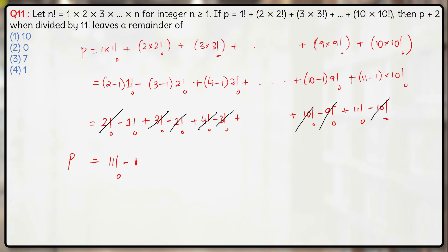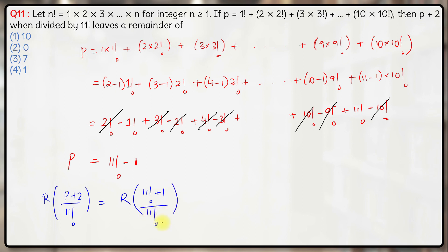Now we find the remainder when p + 2 is divided by 11!. Since p = 11! − 1, then p + 2 = 11! + 1. When 11! + 1 is divided by 11!, the 11! part gives remainder 0, and the 1 gives remainder 1. So the final remainder is 1, which corresponds to option 4.